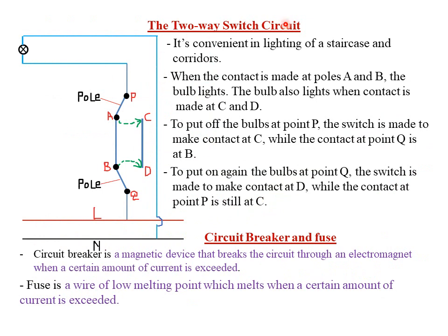Next, we look at the two-way switch circuit, which is convenient for lighting staircases — one switch at the upper end and another at the lower end — or one at each end of a corridor. When pole P is connected to point A and pole Q to point B, the circuit is complete: current flows through the live wire from Q to B to A to P, then through the bulb to the neutral wire, and the bulb lights.